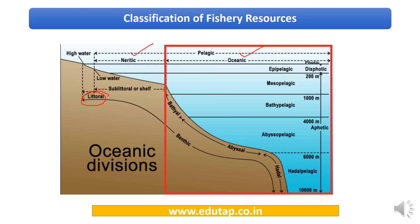Based on sunlight penetration, the water column divides into photic and aphotic zones. The photic zone includes the euphotic zone (well-lit, supports photosynthesis) and the dysphotic zone (poorly lit, light penetrates but plants cannot use it for photosynthesis effectively). The aphotic zone is completely dark. Benthic zones are divided into supralittoral, littoral, sublittoral, bathyal, abyssal, and hadal.